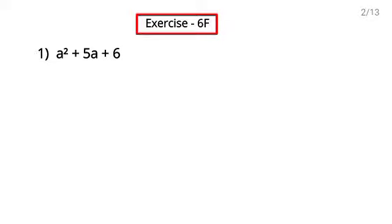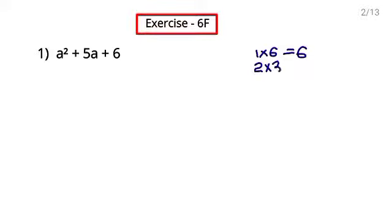Now let's practice with some more questions. Question number one of exercise 6F. This is in the form of x square plus bx plus c. First of all we will check the constant term 6 and find the factors to match the middle term coefficient.